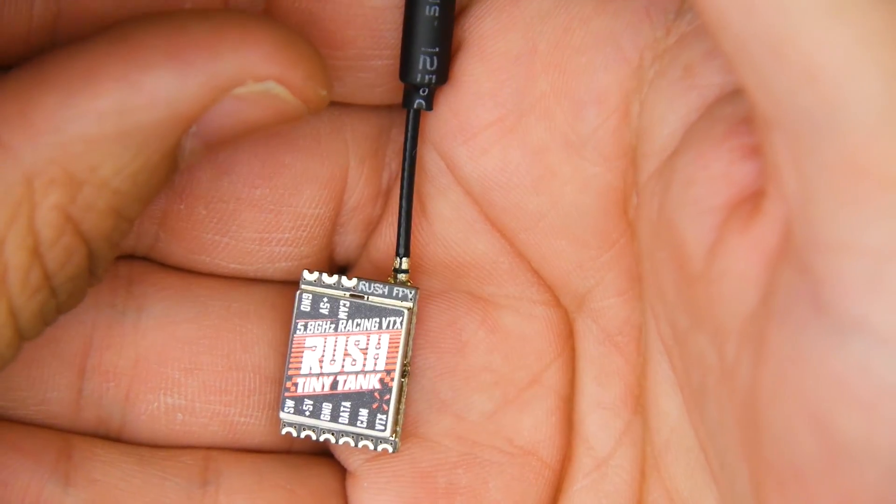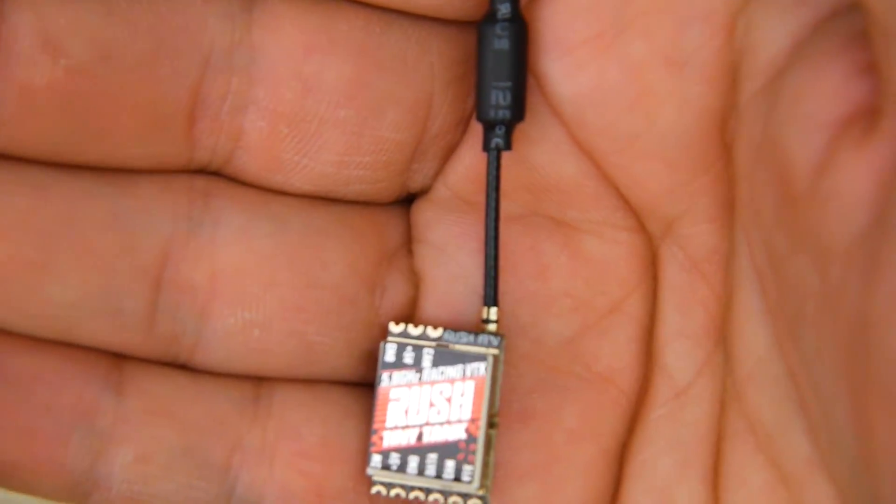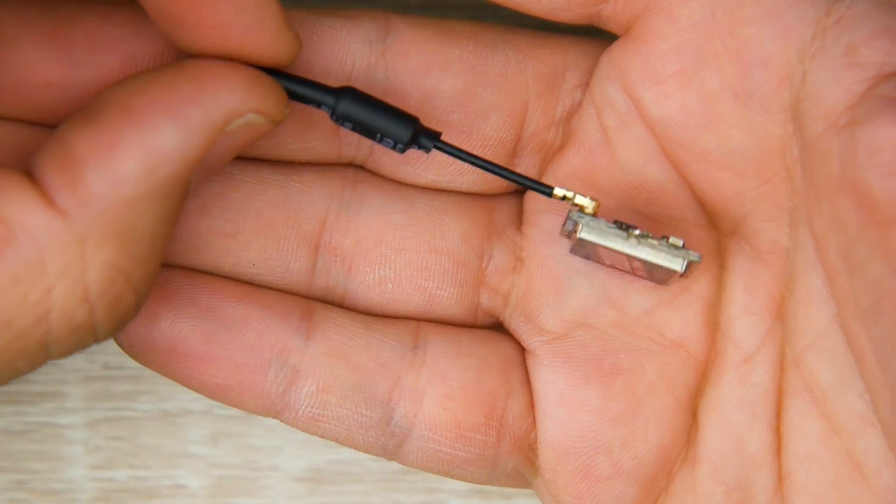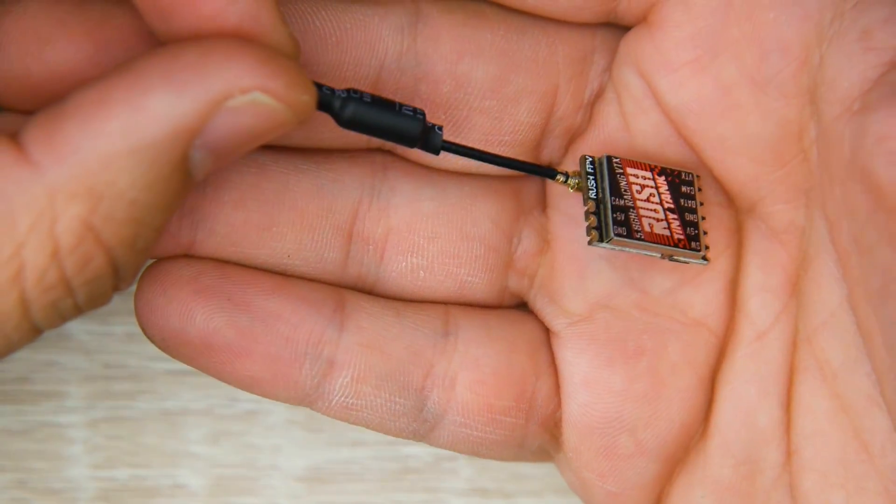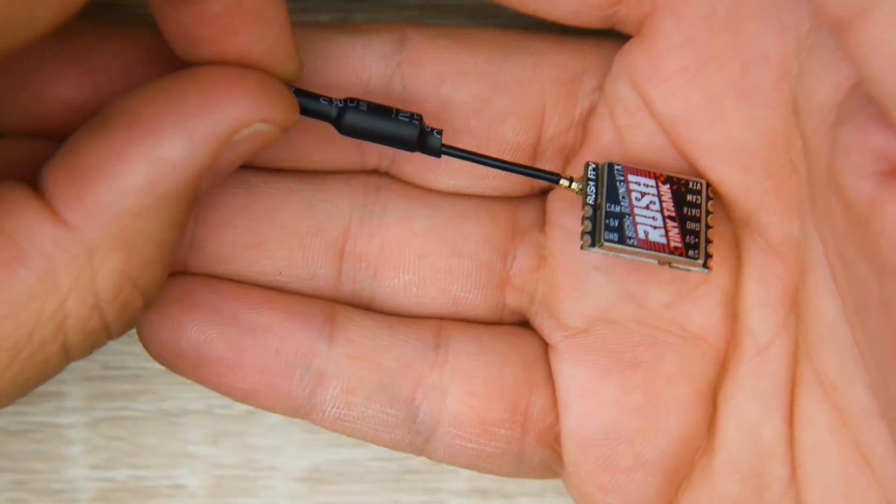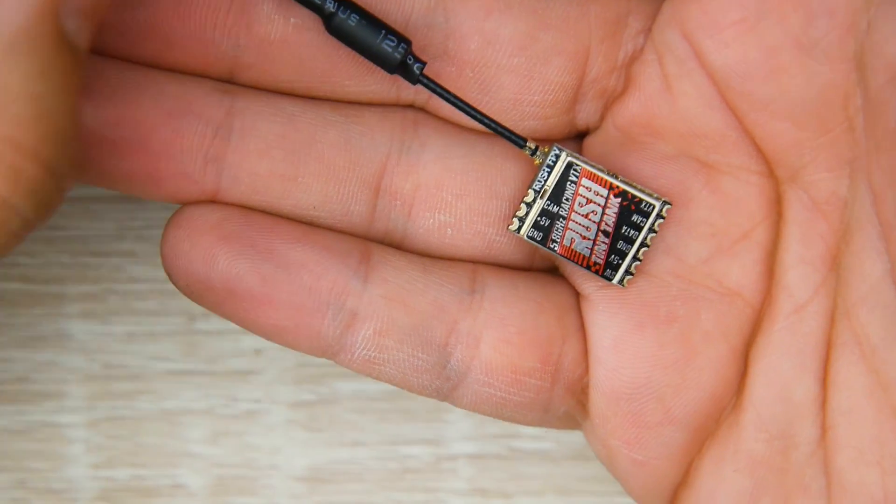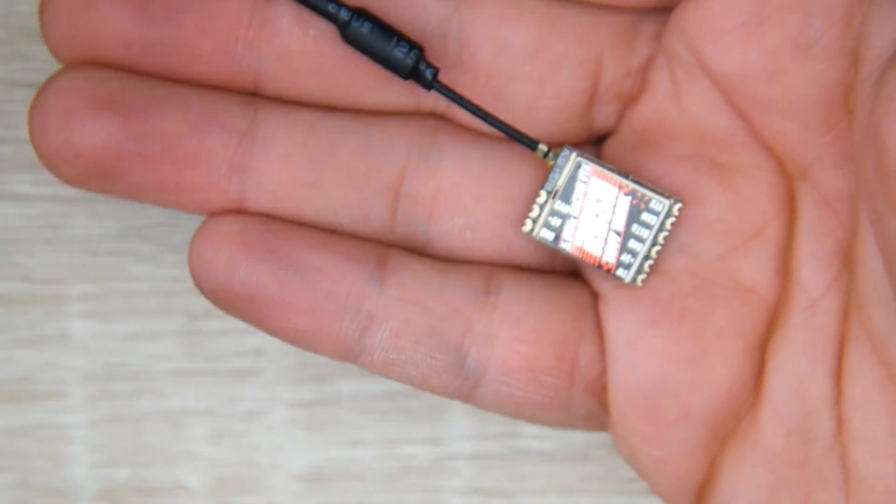They're really trying to innovate and drop the prices and make things a little bit better than what they are. Right now, I think we're having a small battle between the digital and the analog market. This is kind of one of the things that you might want, like for example, a toothpick.